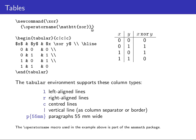You can also have an optional argument specifying the number of arguments the macro accepts. Then you use #1, #2, #3 as local variables inside the macro definition in order to expand the arguments in the body of the macro.